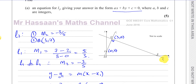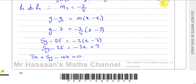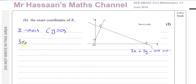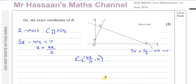That's part A done. For part B, we need to find the exact coordinates of R. Since R is on the x-axis, the y-value is 0. Substituting y = 0 into the equation of L2 gives 3x minus 44 = 0, so x = 44 over 3. The coordinates of point R are (44/3, 0).